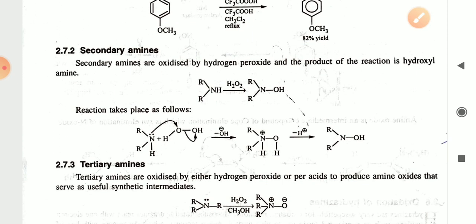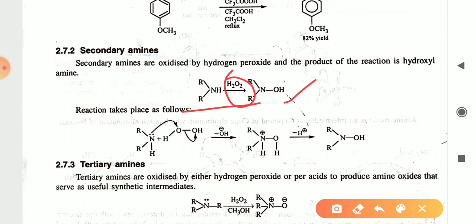Secondary amines are oxidized by hydrogen peroxide, and the product is hydroxylamine. In the presence of H₂O₂, the secondary amine gives the hydroxylamine. The mechanism: the electron pair on nitrogen donates electrons to the peracid, the O–H bond breaks, the OH radical is eliminated, and the intermediate R₂N⁺–OH forms. After removing one more hydrogen, hydroxylamine is obtained.